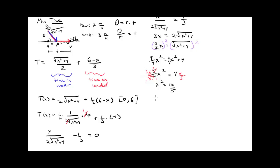Taking the square root of both sides gives x = ±4/√5. I get two values that made the derivative zero, but the negative value is not in my interval [0, 6], so I discard it. The only critical point I care about is x = 4/√5 ≈ 1.788.